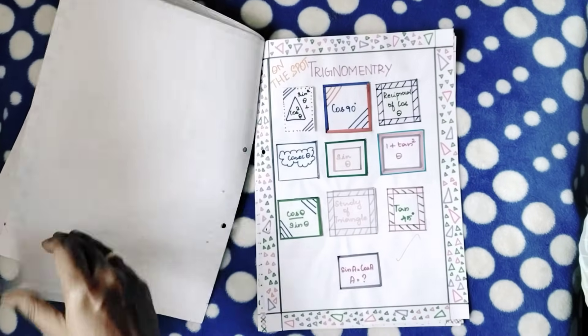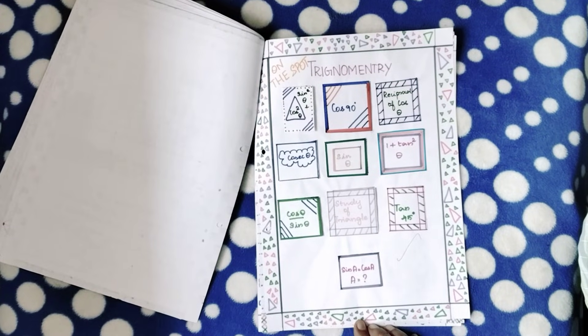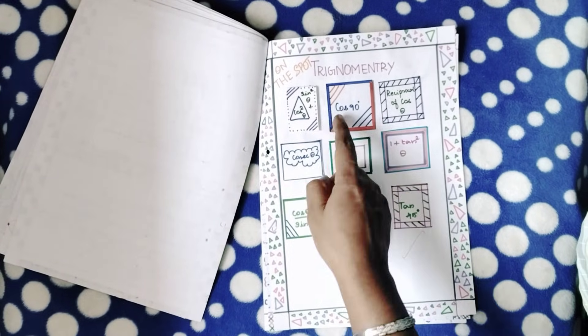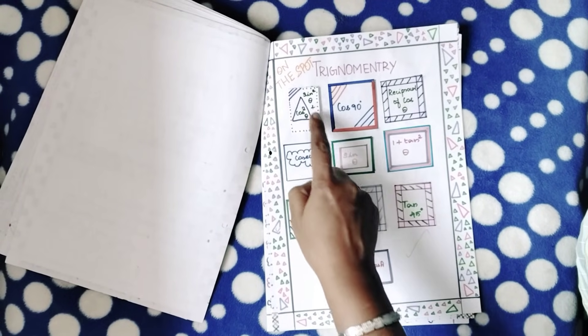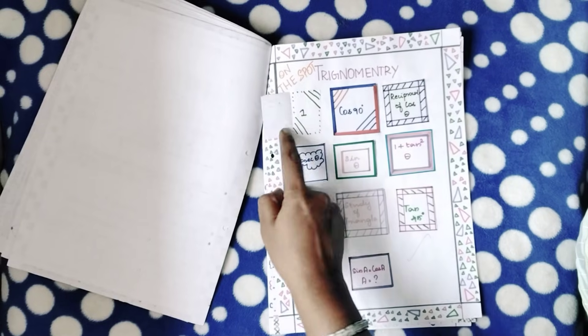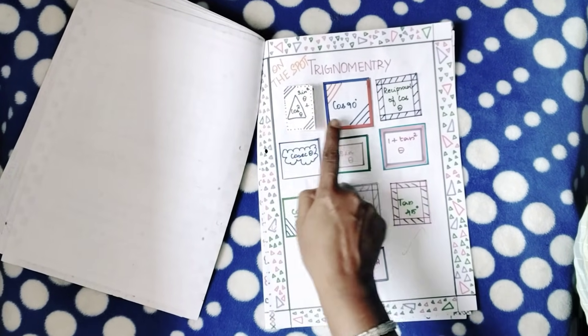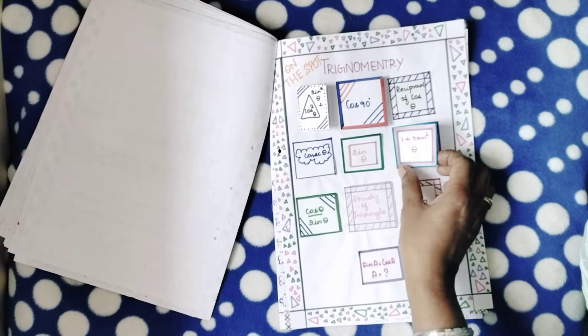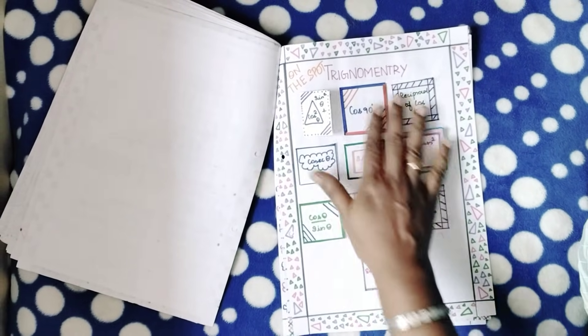Then the next one will be trigonometry where she's done a very simple creative work. Sin² θ + cos² θ - question is here, answer will be there inside, so it is one. Then cos 90° value zero, she's done it inside. 1 + tan² θ is sec² θ, so like that she's done a page.